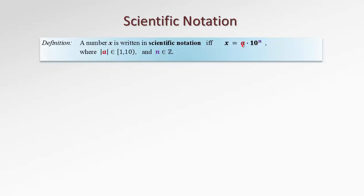What do we require from a? The absolute value of the number a is required to fall in the interval from 1 to 10, including 1 but excluding 10. Basically, it tells us that a must be a number of the sort: one non-zero digit — for example 2 — then place a dot, and then anything that comes after it, let's say 105. So that will be a good candidate for a number a.